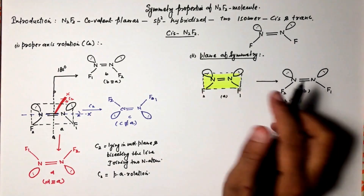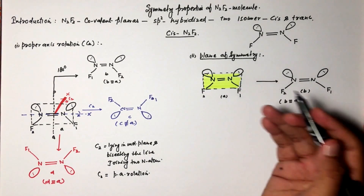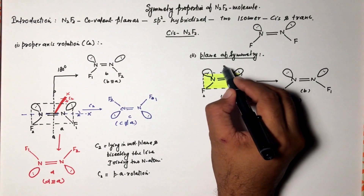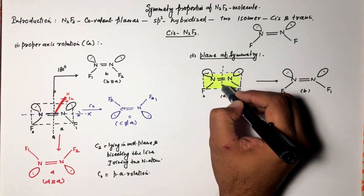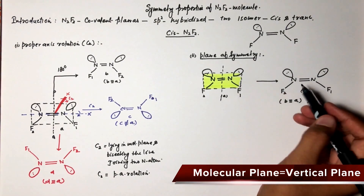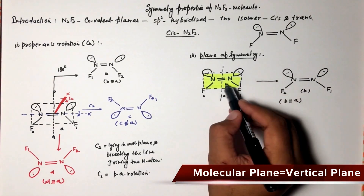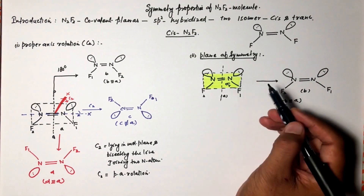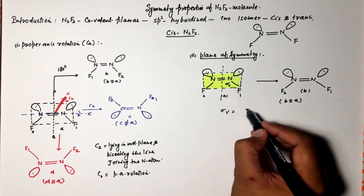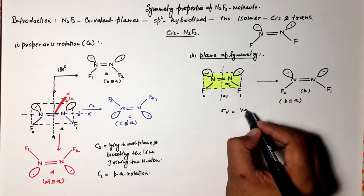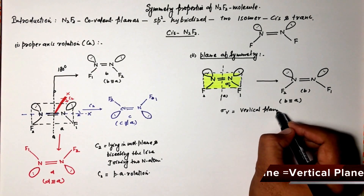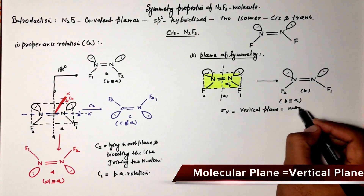The question is: is this plane a vertical or horizontal plane? We know that this plane contains the principal axis of rotation. A plane containing the principal axis of rotation is considered a vertical plane. So sigma v is present in this molecule — this is the vertical plane, and it is the molecular plane.